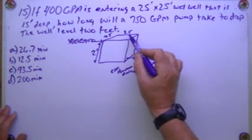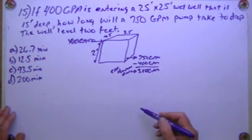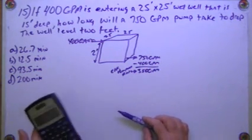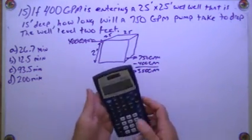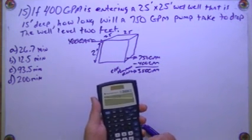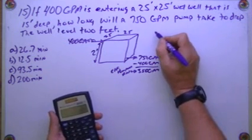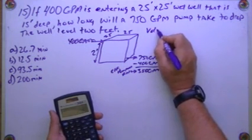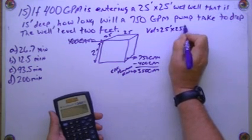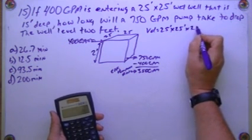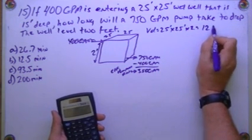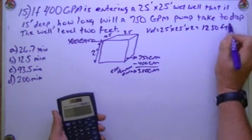25 times 25 times 2. 25 times 25 is 625. It's going to give me volume equals 25 times 25 times 2, which is going to equal 1,250 feet cubed.